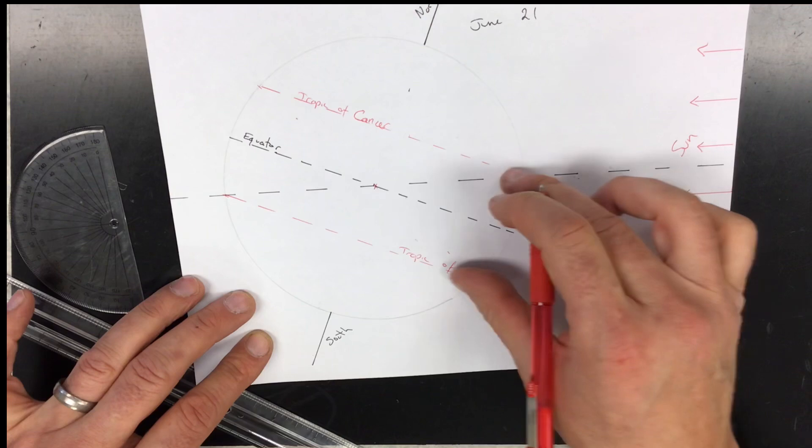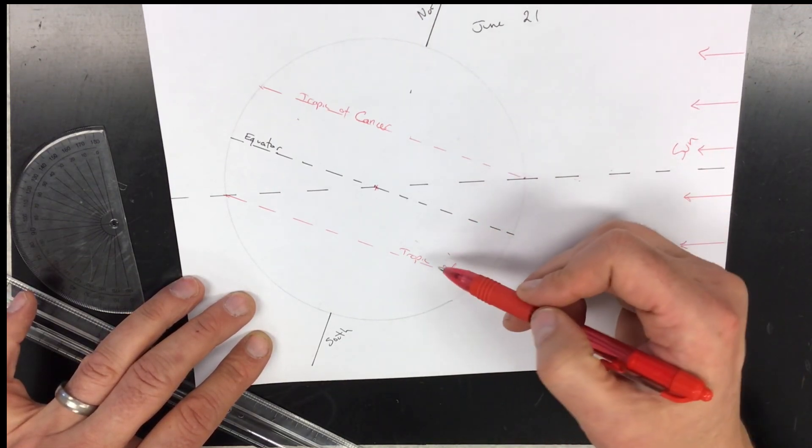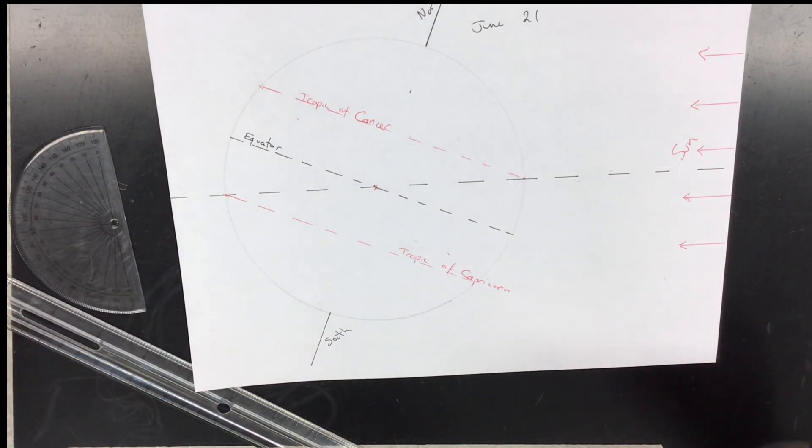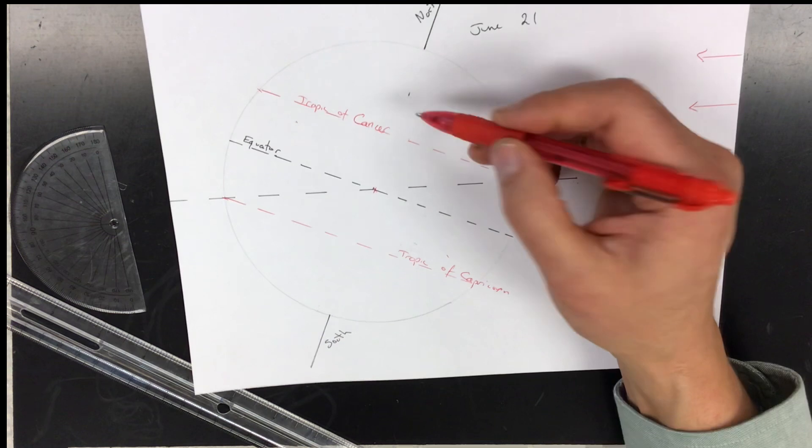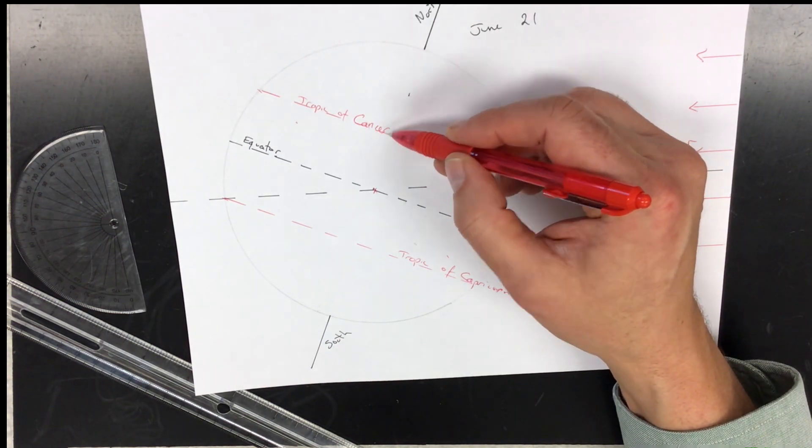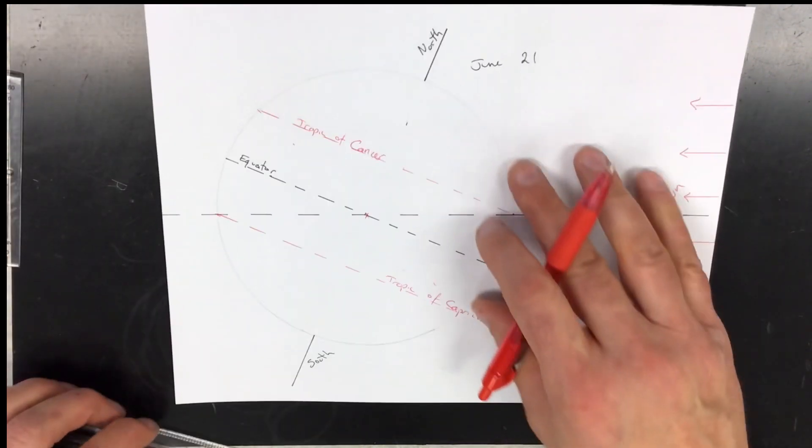Between those two points, those are the tropics. From 23 and a half degrees north to 23 and a half degrees south, that whole region is called the tropics. At least on one day every year the sun is directly overhead, like 90 degrees. At solar noon you look straight up and there's the sun, directly overhead. We in Pittsburgh are at 41 degrees north latitude, well north of that, so the sun never goes directly overhead.